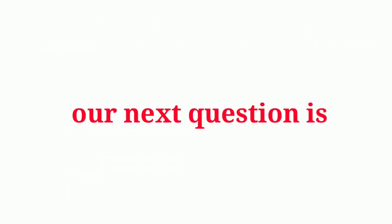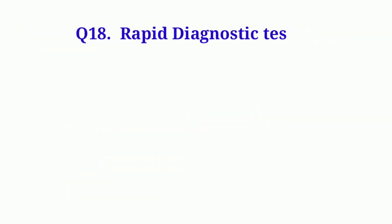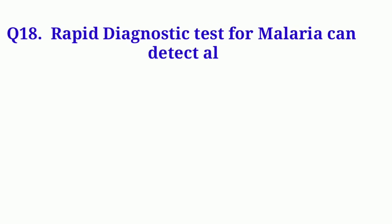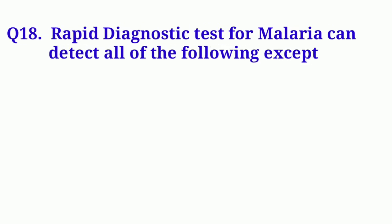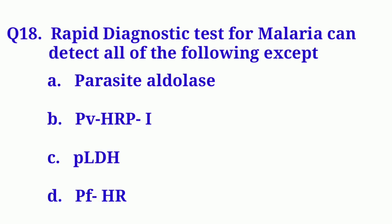Our next question is: Rapid diagnostic tests for malaria can detect all of the following except. Option A: Parasite aldolase. Option B: PBHRP1. Option C: PLDH. Option D: PfHRP2.